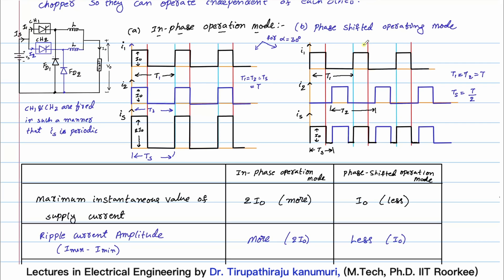Now coming to the phase-shifted operating mode. In this mode, all choppers are not fired at the same time. They are fired with some phase displacement in such a manner that the supply current waveform is symmetrical and periodic. Since each chopper operates for 30%, the second one is shifted and placed in between the period when the first chopper is turned off. So for one duration, chopper one is turned on (shown in black); then both choppers are off for some duration; then chopper two is turned on (shown in blue). This pattern of chopper one and chopper two alternating continues.